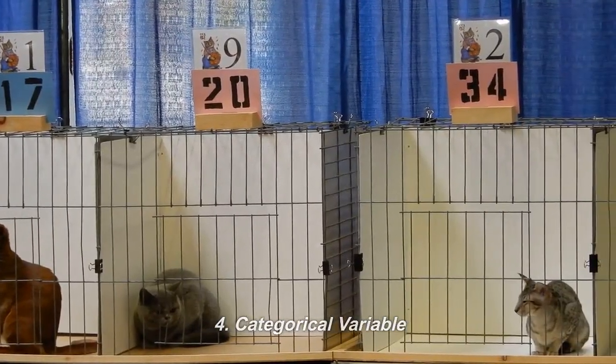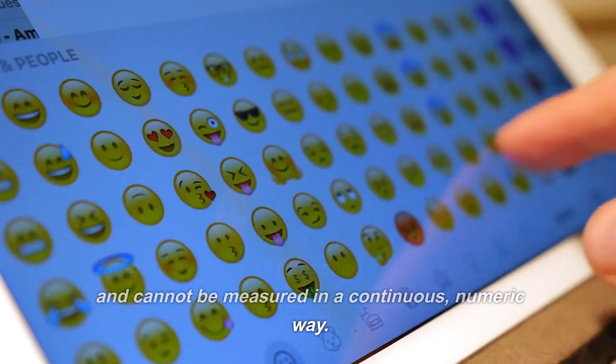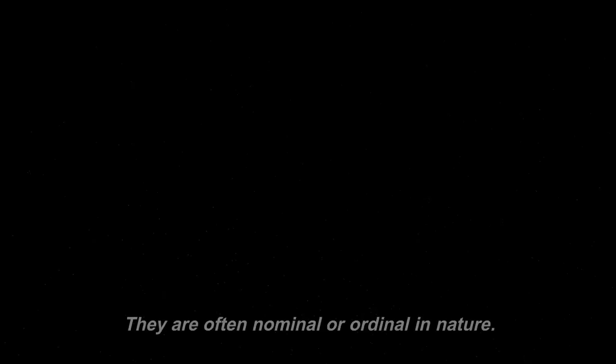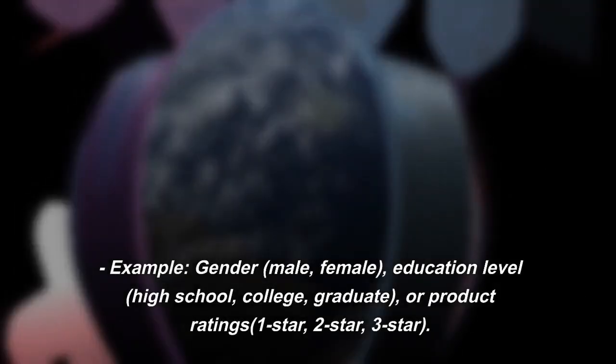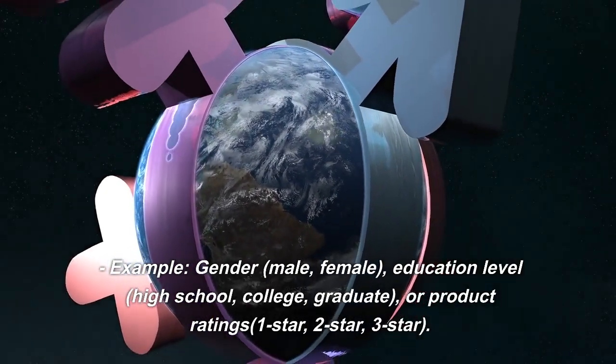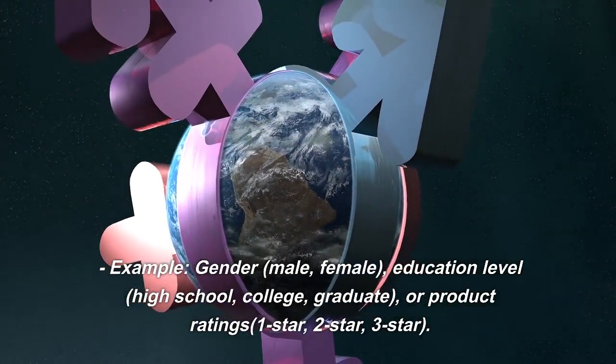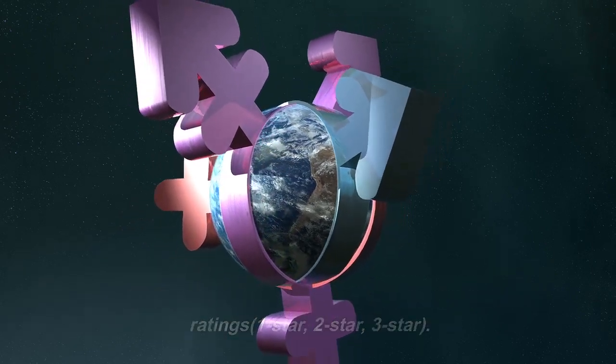Categorical variable. Categorical variables represent categories or groups and cannot be measured in a continuous numeric way. They are often nominal or ordinal in nature. Example: Gender (male, female), education level (high school, college, graduate), or product ratings (1 star, 2 star, 3 star).